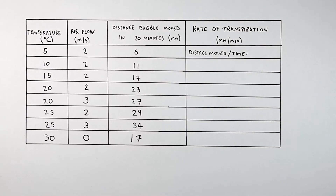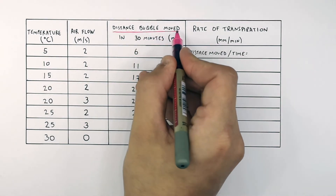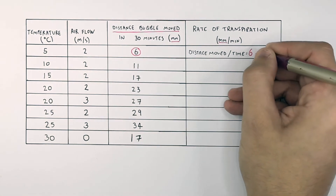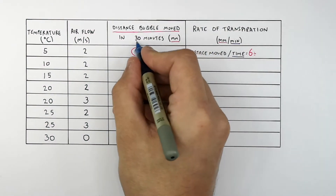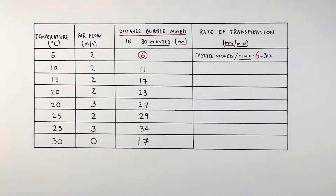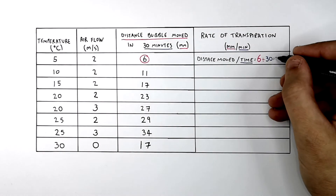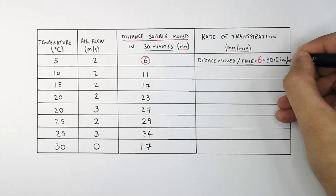To work out the rate of transpiration at 5°C with an airflow of 2 meters per second, you take the distance moved by the bubble — 6 millimeters — and divide it by the time, which is 30 minutes. The rate of transpiration is 0.2 millimeters per minute.